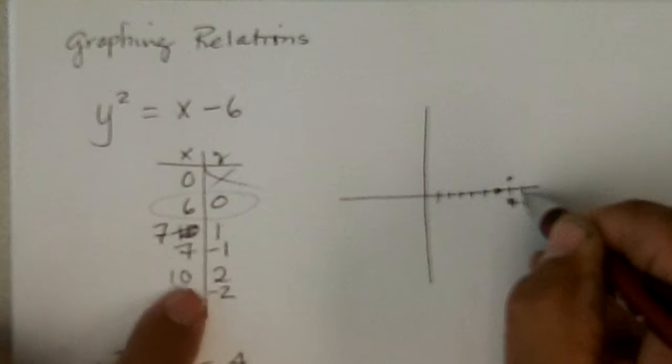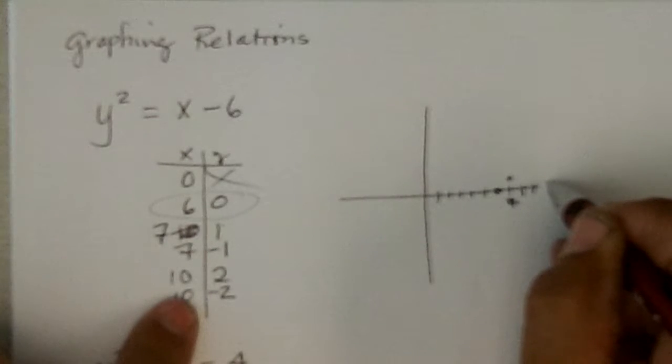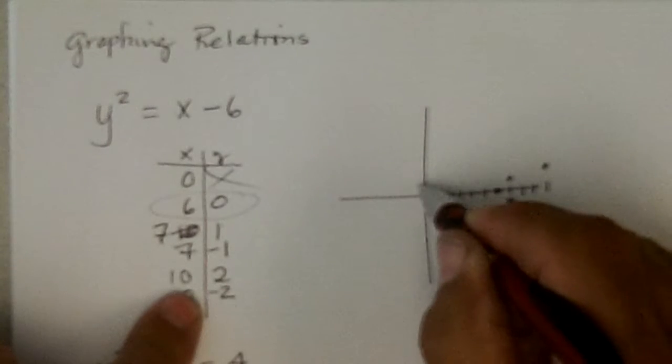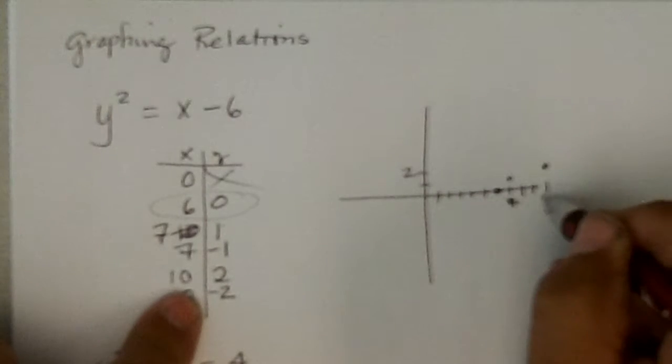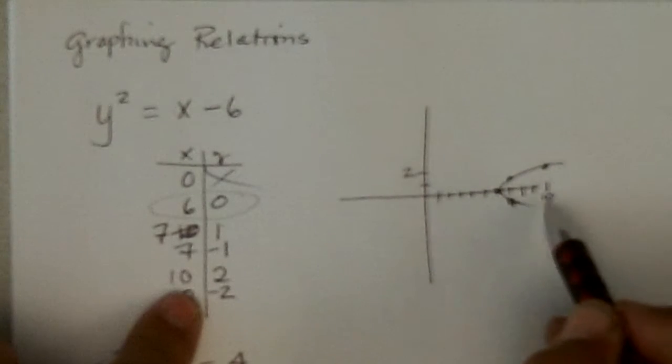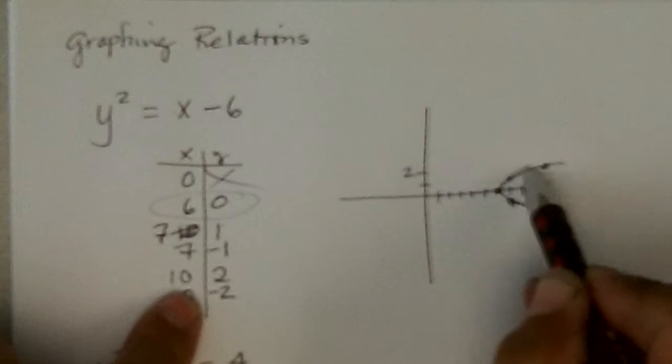At 8, 9, and finally 10, we get 2, and negative 2. And so, we're starting to get this sideways parabola.